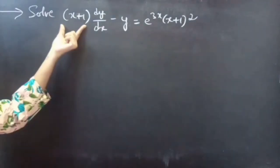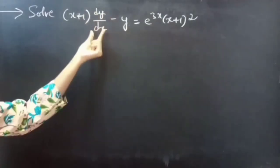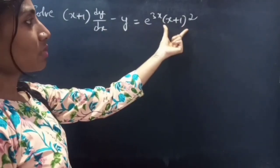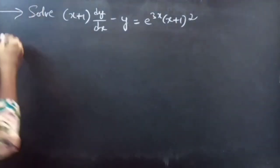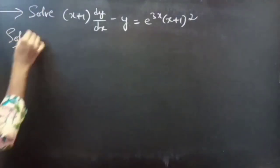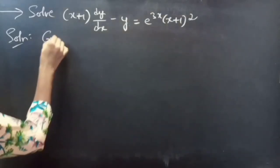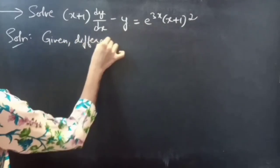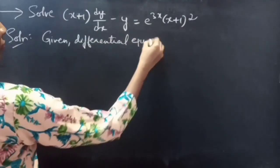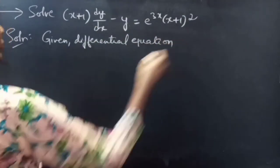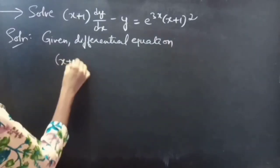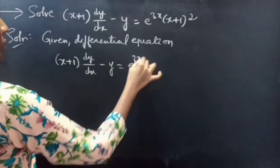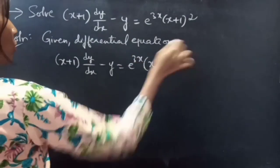Problem. Solve: (x + 1) dy/dx minus y equals e^(3x) times (x + 1) whole square.